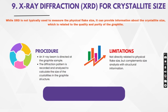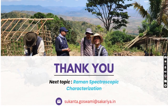Last but not least, XRD — which is common for understanding minerals — can also be utilized for crystallite size, though not direct flake size. While XRD is not typically used to measure physical flake size, it can provide information indirectly about crystallite size, which is related to the quality and purity of graphite. It complements size analysis with structural information. With this, I would like to stop this discussion here. Next, I will be discussing Raman spectroscopic characterization in intense detail, as these are sophisticated techniques which are very important nowadays.